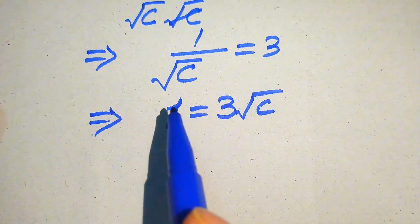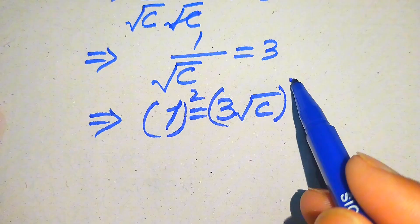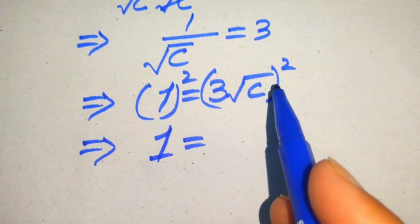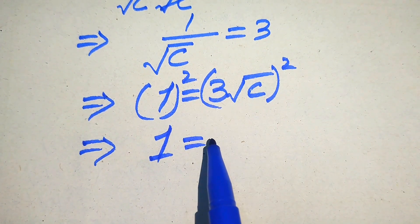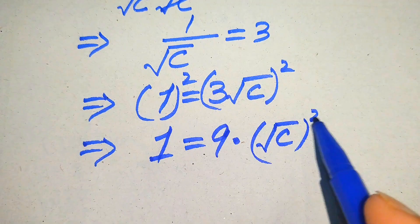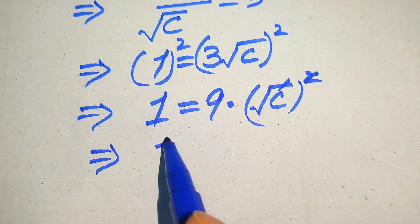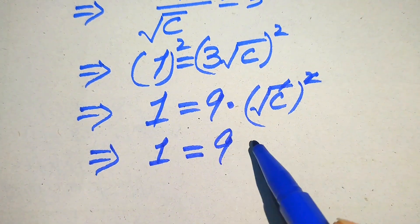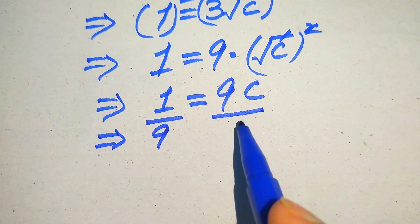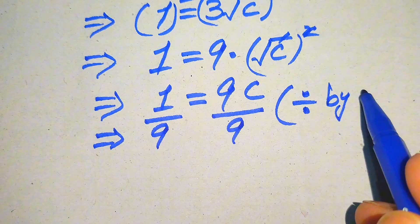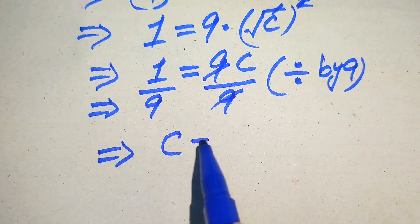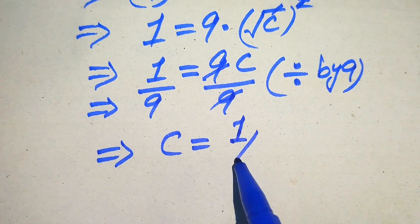For the values of c, we need to square both sides. When we square both sides, 1 squared becomes 1, and we apply the square separately to both values on the right: 3 squared becomes 9, and square root of c squared gives us c. So we get 1 equals 9 times c. To find c, we divide both sides by 9, the 9 cancels out, and we get the root c equals 1 over 9.